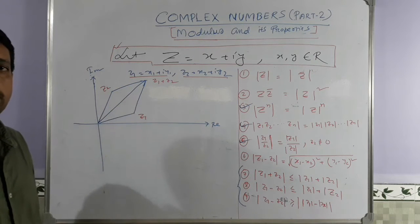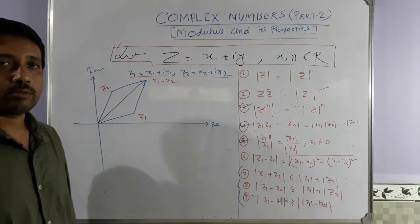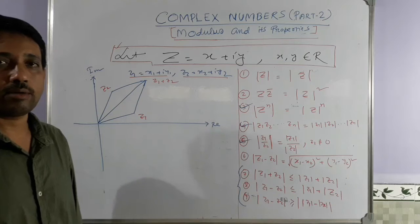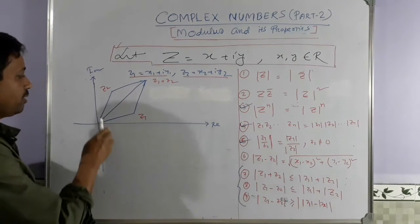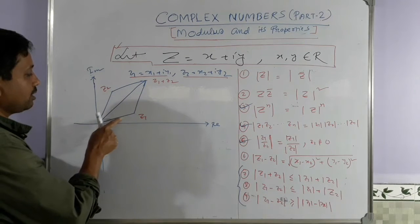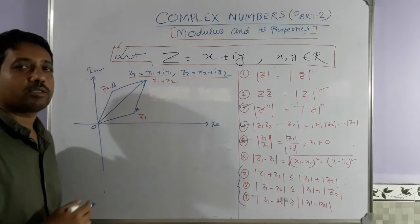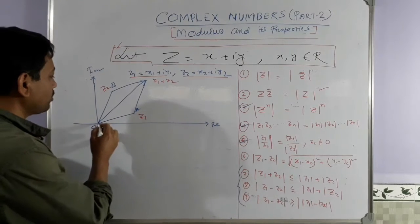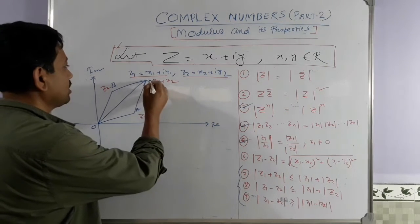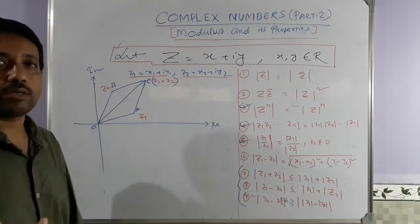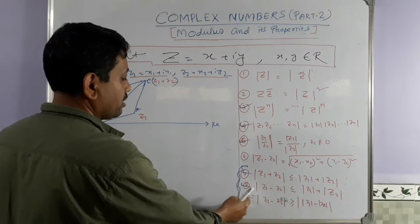If two points z₁ and z₂ are given on the Argand plane, and you want to know the position of z₁ + z₂, you should remember: if you complete a parallelogram with OA and OB as two adjacent sides, then the opposite vertex from the origin, say point C, represents the position of z₁ + z₂.